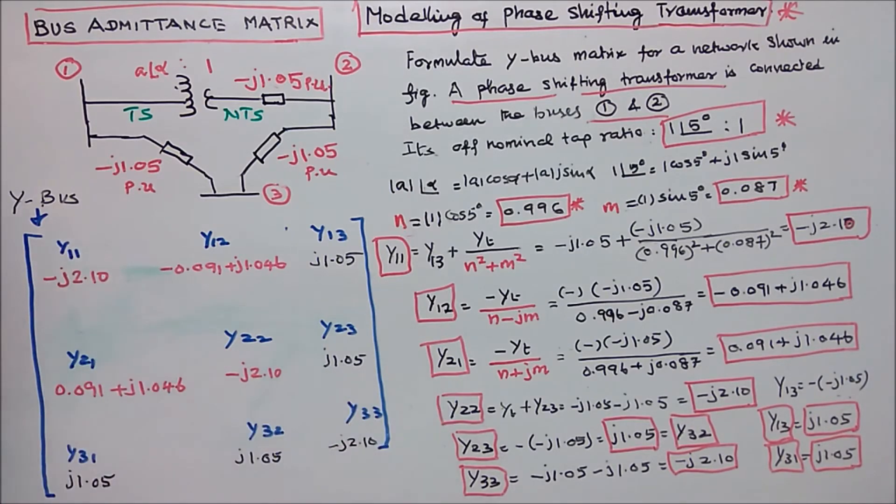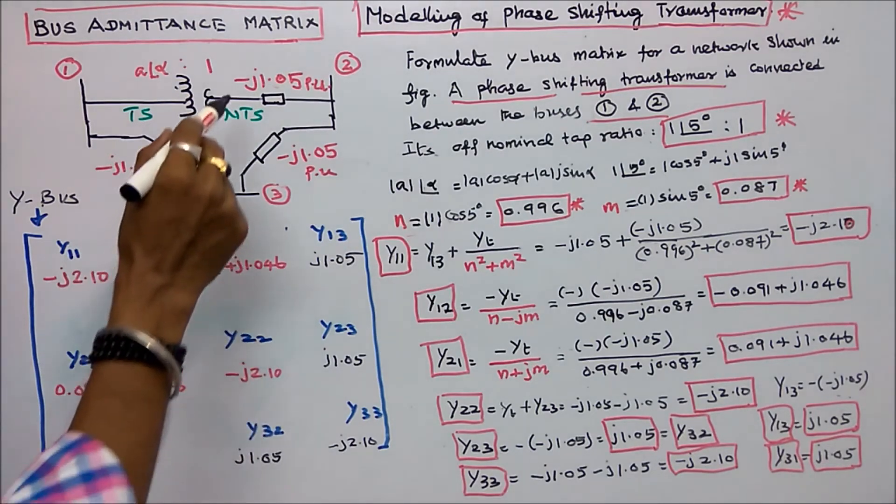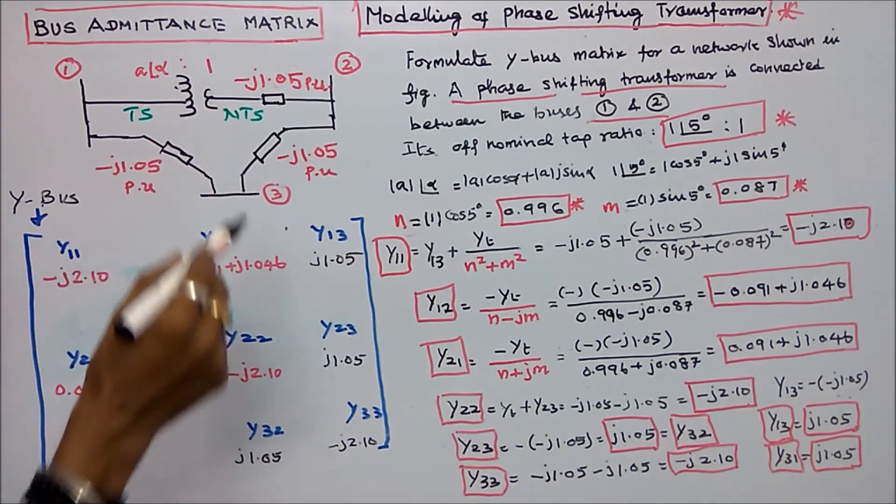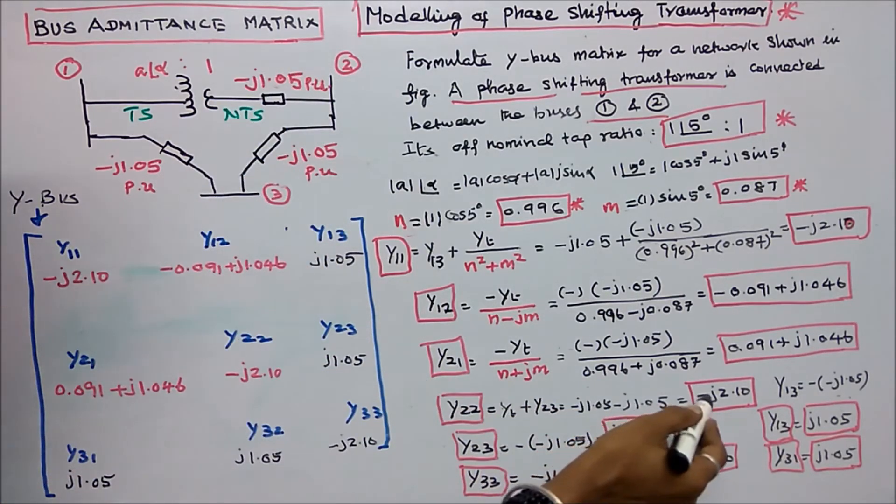The next is y22. y22 is equal to yt minus j 1.05 minus j 1.05. Add it and we will get minus j 2.10.